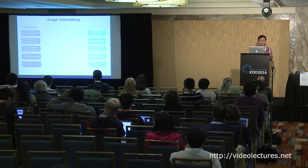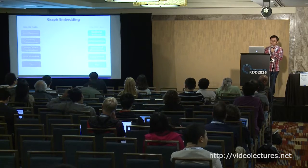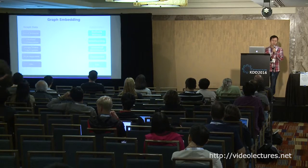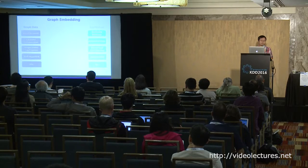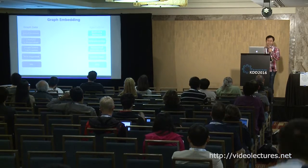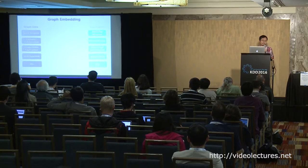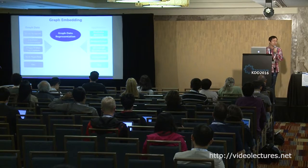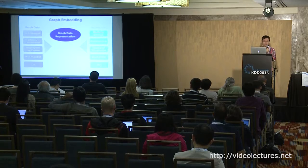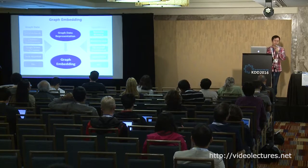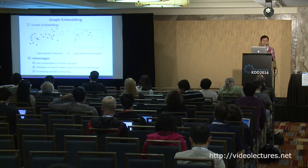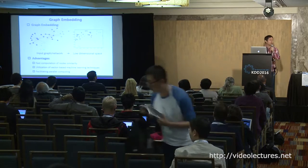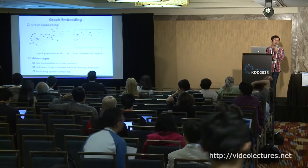Let me introduce some background. We are in the era of big data and many data are in the format of graphs, for example social networks and web hyperlinks. On this graph data we have many applications such as link prediction and classification. Graph data representation plays a very important role since the volume of data is usually very large, and graph embedding is one such paradigm. Basically, graph embedding tries to project nodes of a graph into a vector space while preserving the structure and inherent properties of the graph.